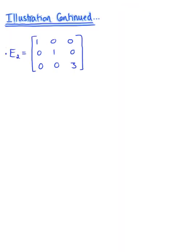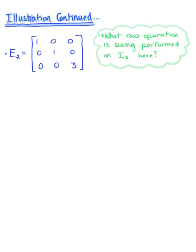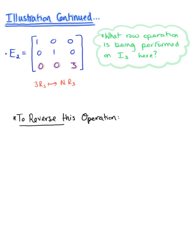The second elementary matrix E sub 2 is the 3 by 3 matrix: 1, 0, 0 in row one; 0, 1, 0 in row two; and 0, 0, 3 in row three. Looking at this elementary matrix, we can see that it is scaling the third row by a factor of 3. Our job is to reverse this operation, so we do the opposite: we scale the third row of the identity matrix by a factor of 1 third to produce the new third row.